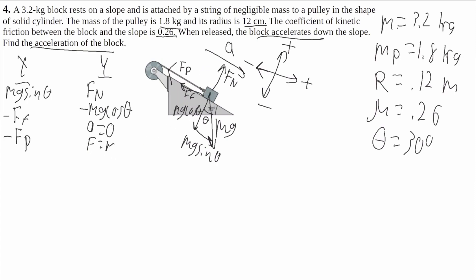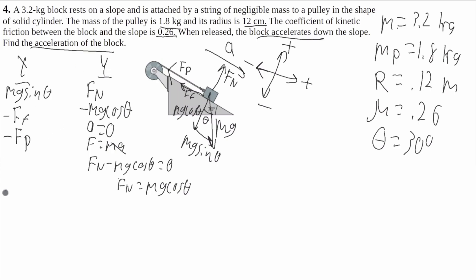So F equals MA. Since A is 0 in the Y, I'll get Fn minus Mg cosine of theta is equal to 0, so Fn is equal to Mg cosine of theta. In the X, A is not going to be 0 — that's what I'm solving for. So I'll have Mg sine of theta minus force of friction minus force of the pulley is equal to MA.